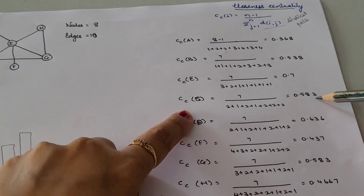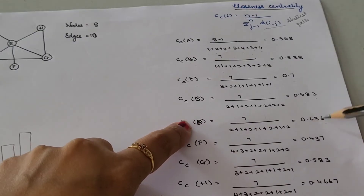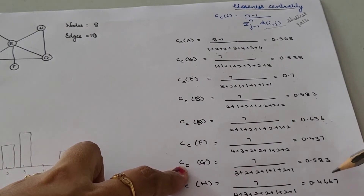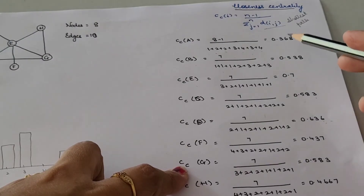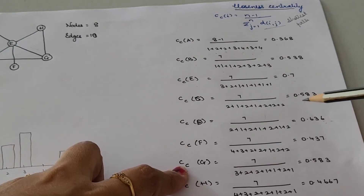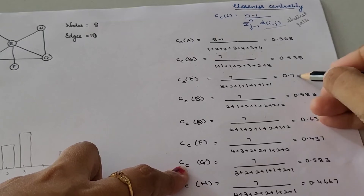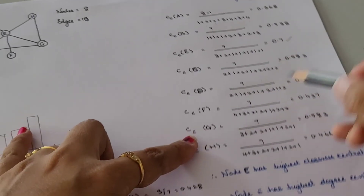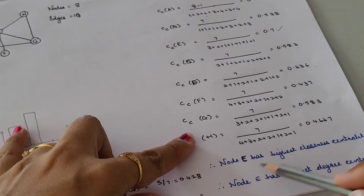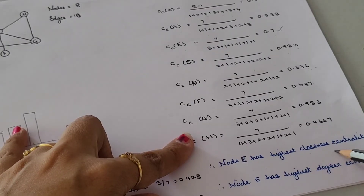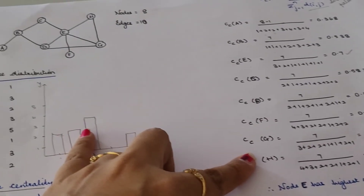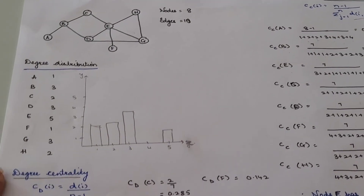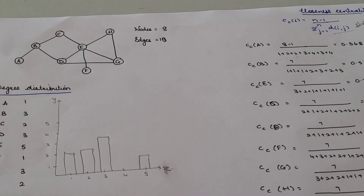For node E you have 0.7, node C has 0.583, node D has 0.636. Comparing all the closeness centrality values, you can see that node E has the maximum value of 0.7. Therefore node E has the highest closeness centrality. This is how for the given graph we calculate degree centrality and closeness centrality.